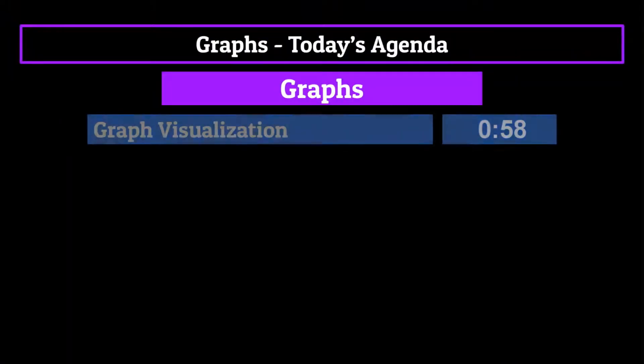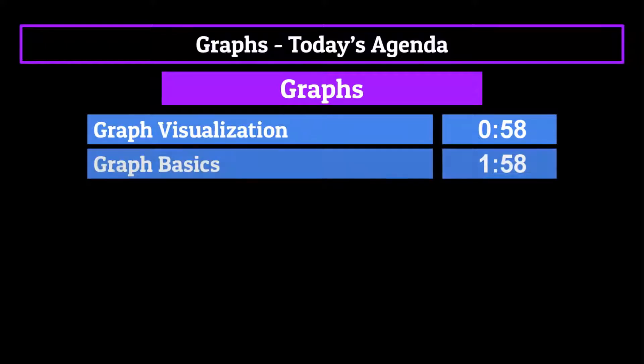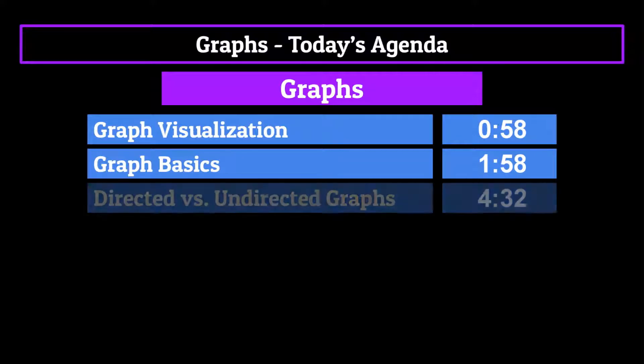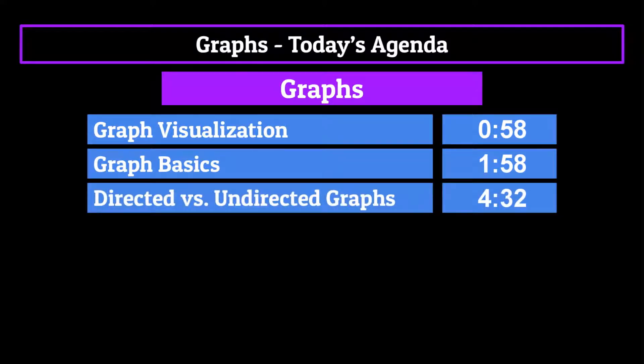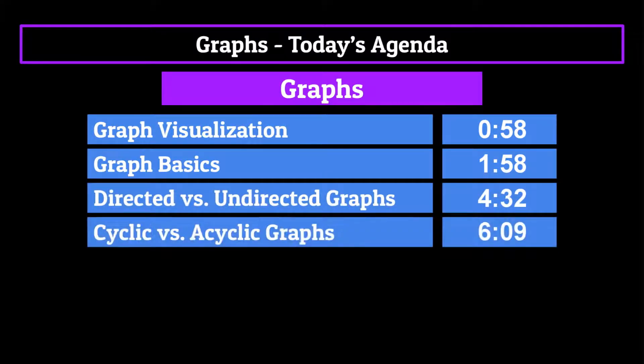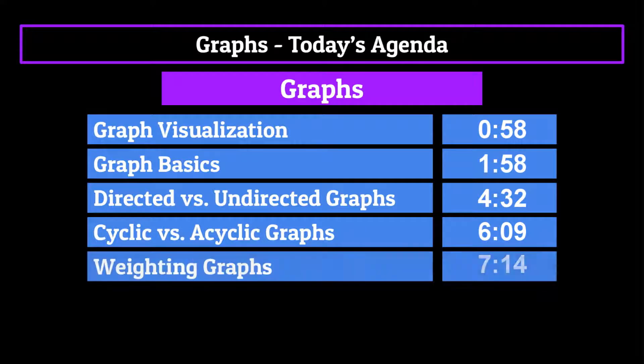We'll begin with a short exercise to help visualize what graphs are, before diving into the specifics of what a graph entails at its most basic form. We'll then jump into the properties of graphs, first talking about directed versus undirected, then cyclic versus acyclic, and finally the practice of weighting graphs.